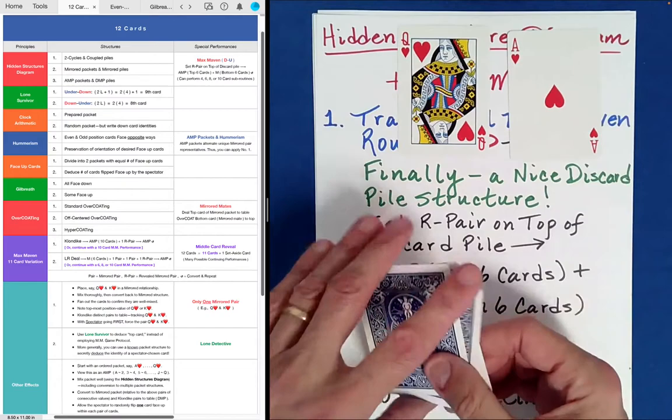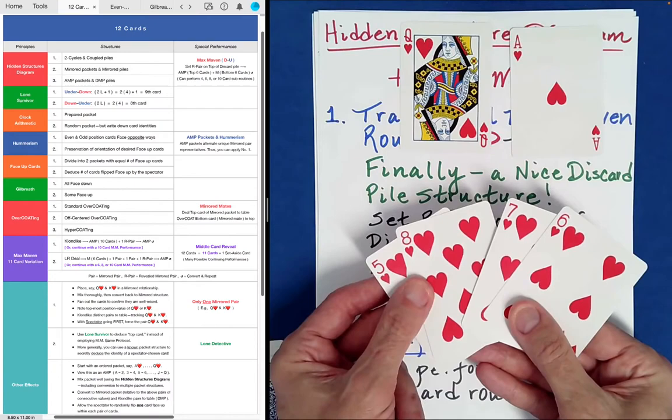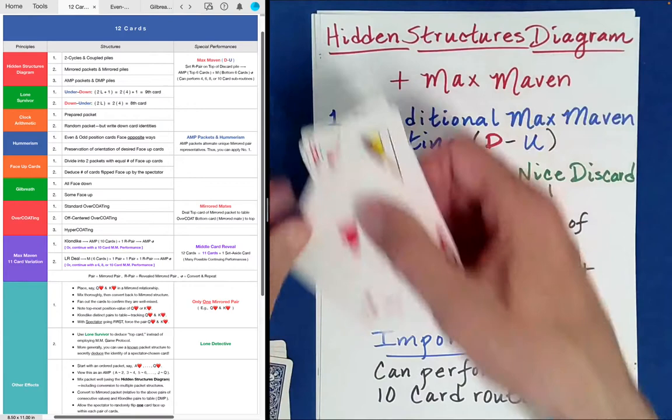And then you may even remember that after a Klondike shuffle, in this particular case, we get a very special packet here. We get an AMP. Do you remember that? So here we have two that add to 13 in those two. So there's much that you can do with this packet after just performing the traditional Max Maven 12 card routine. I wanted to tie it in with previous things that we've done as well.